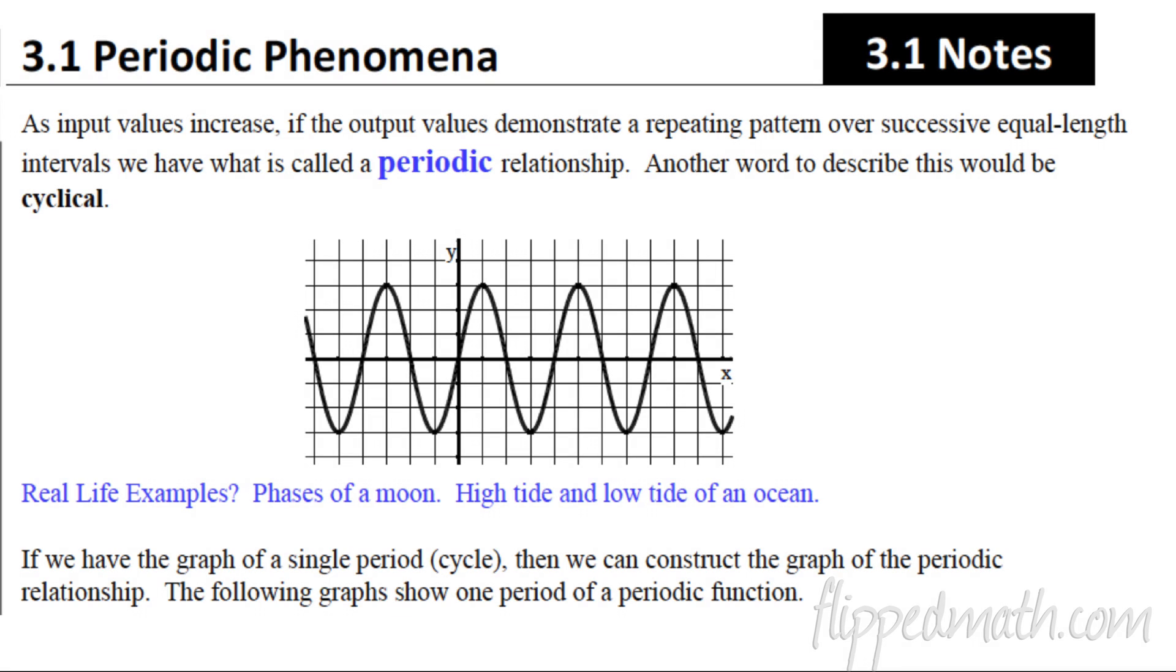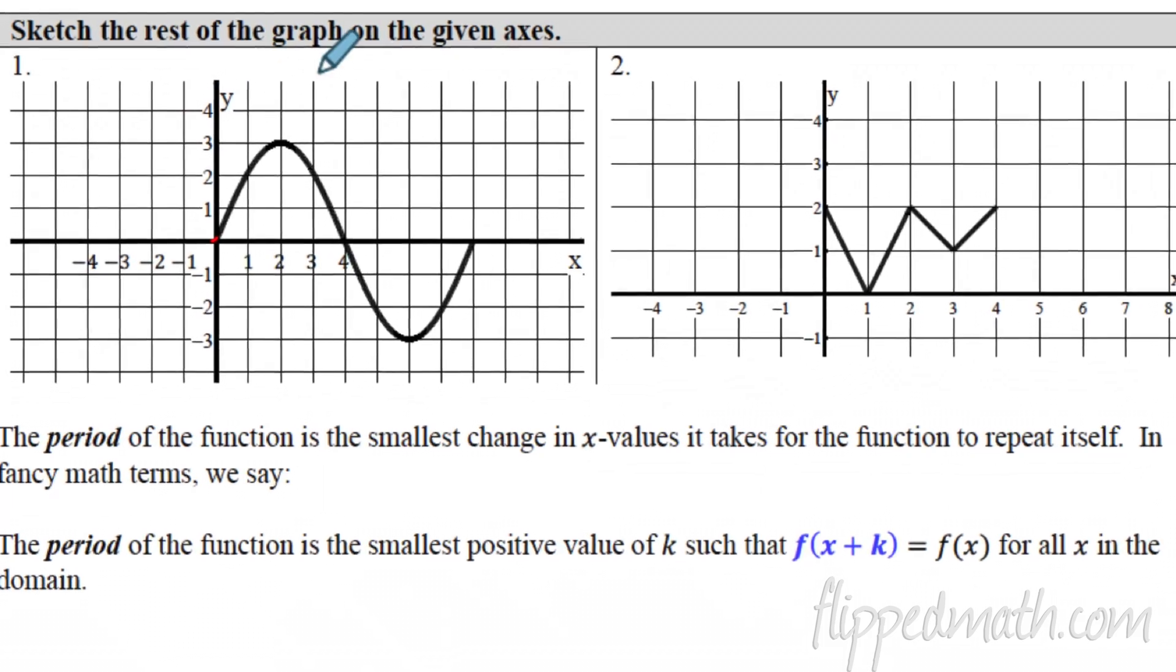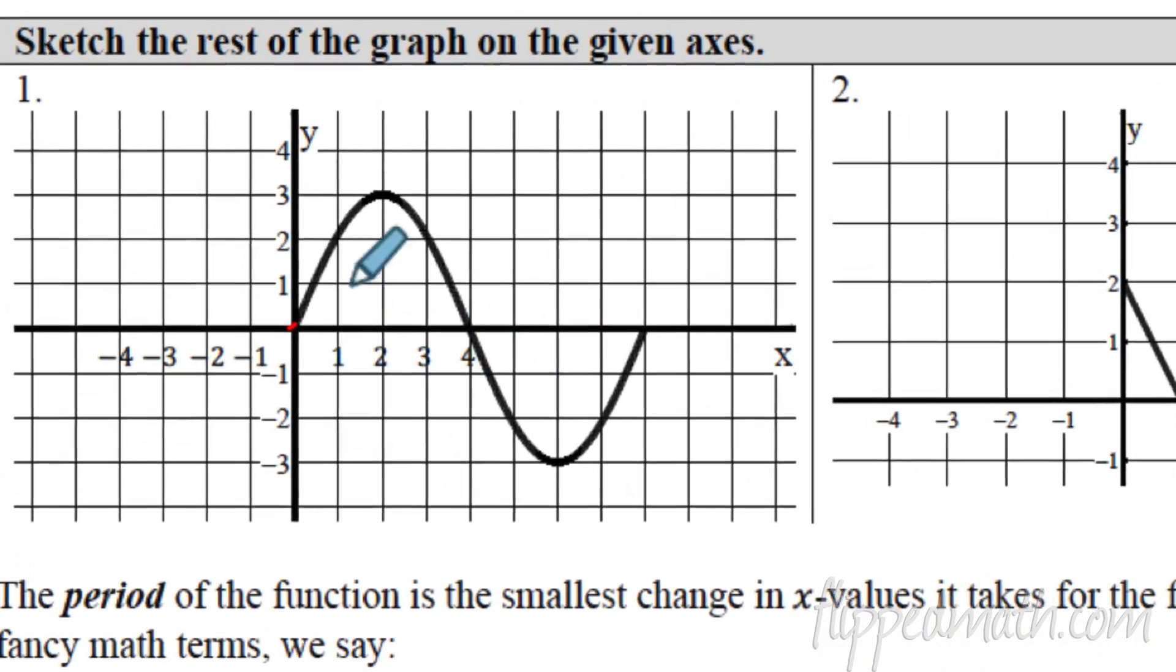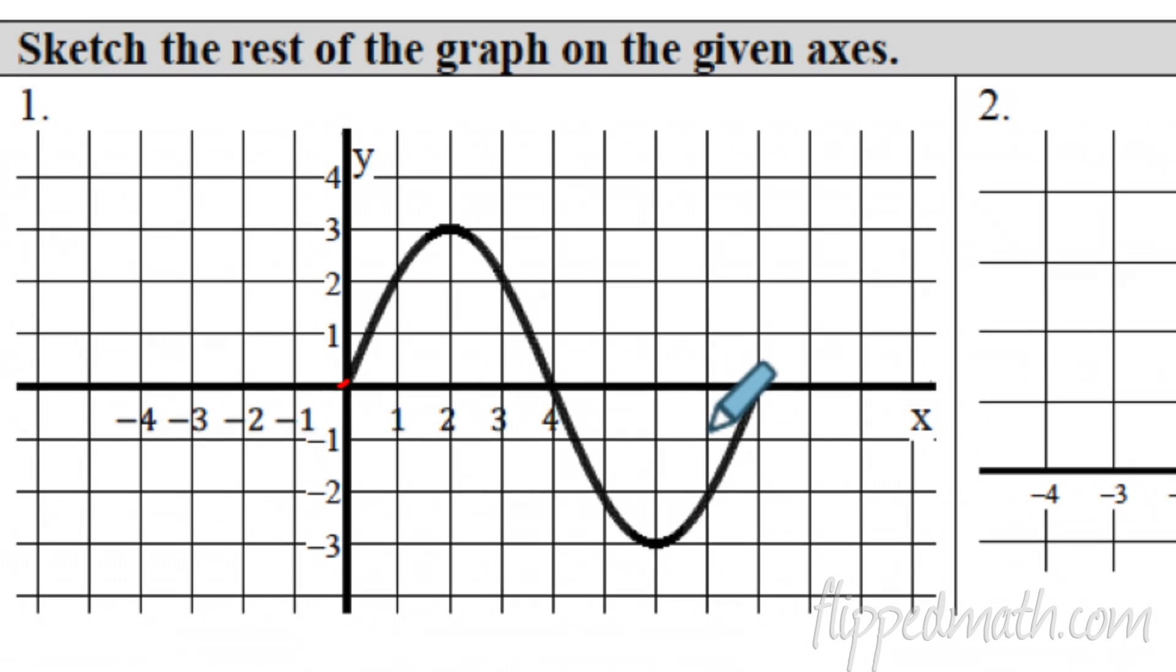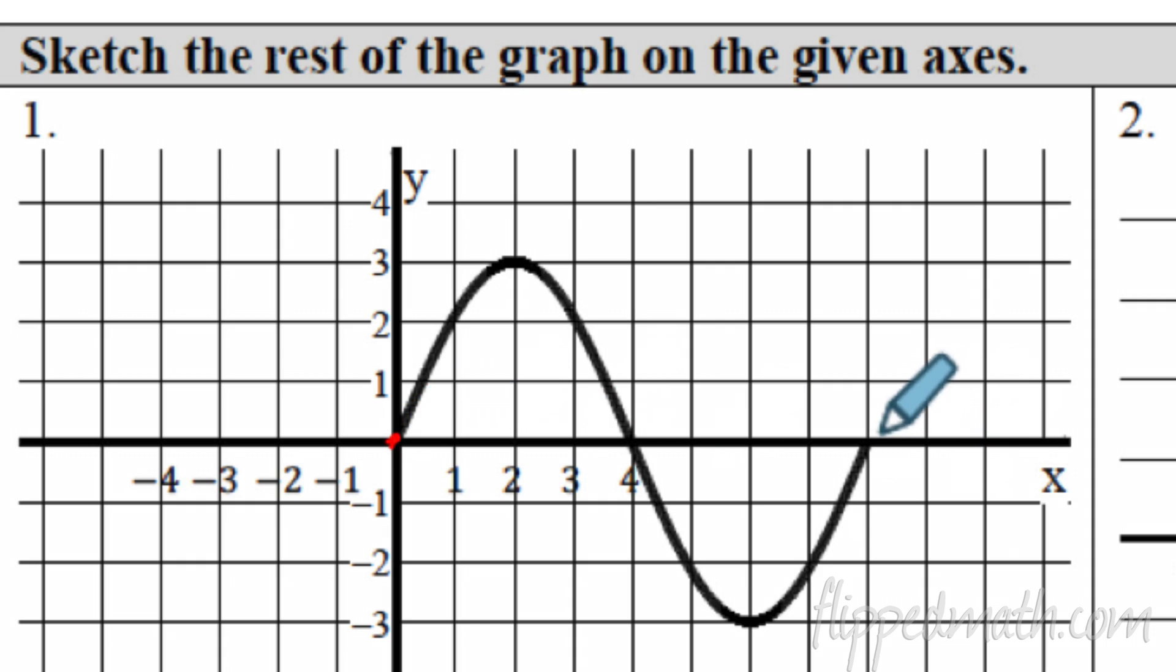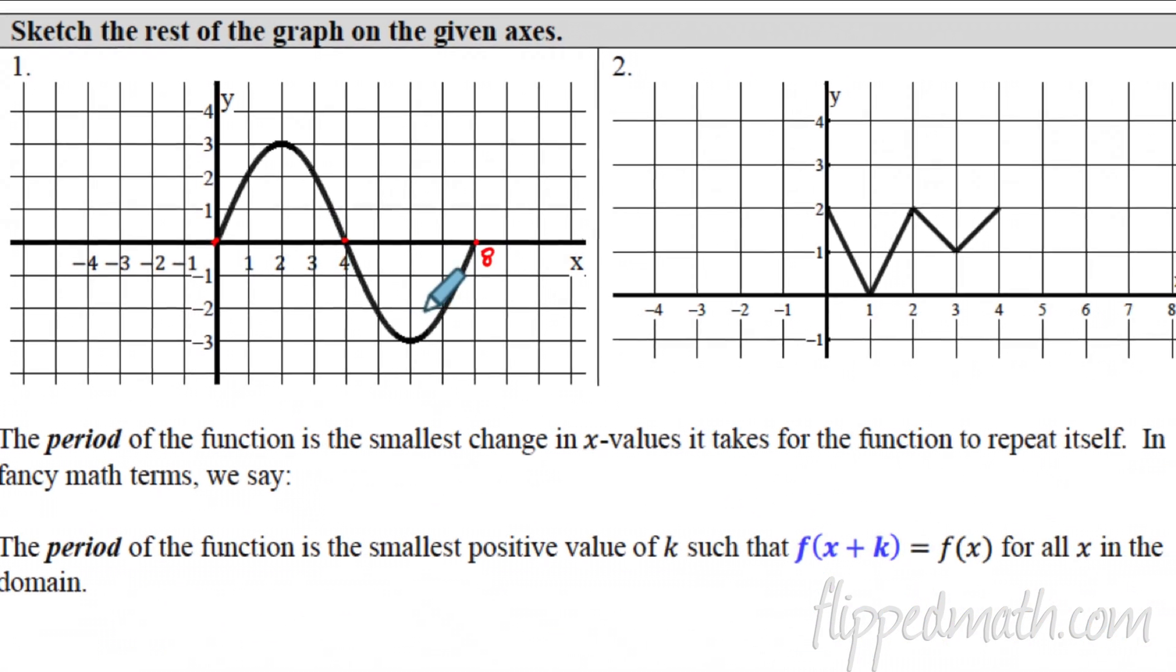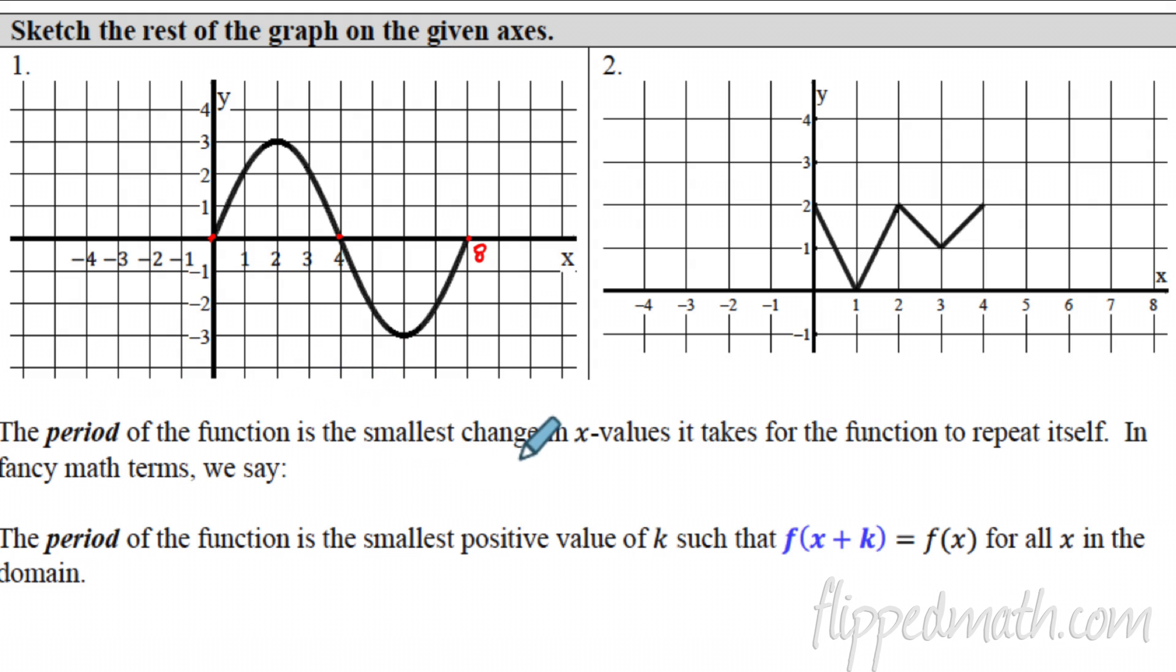Now knowing what we know about periodic relationships and how they repeat, we can take a single period or cycle and construct the rest of the graph based off of what that looks like. Here are two examples, numbers 1 and 2. They want you to sketch the rest of the graph based on one cycle that's given here. I find the key points. I know that this cycle starts at 0, also ends at 0, and there's a 0 in the middle. I also know that it takes 8 units to complete. That's one full cycle here. So I would say the period equals 8. The period of a function is the smallest change in x values it takes for the function to repeat itself.